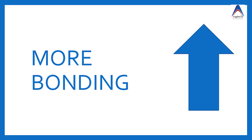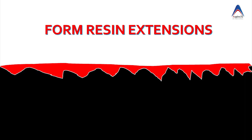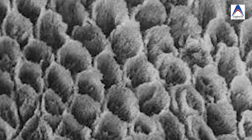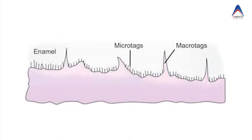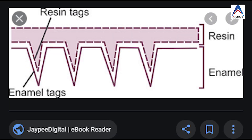The second reason is that when you etch the tooth surface it is going to form microporosities around the enamel prisms, and when the adhesive is applied it is going to penetrate these microporosities and form two types of extensions — the first being the macrotags and the second being the microtags. These two together give us micromechanical bonding, which is seen in resin restorations.